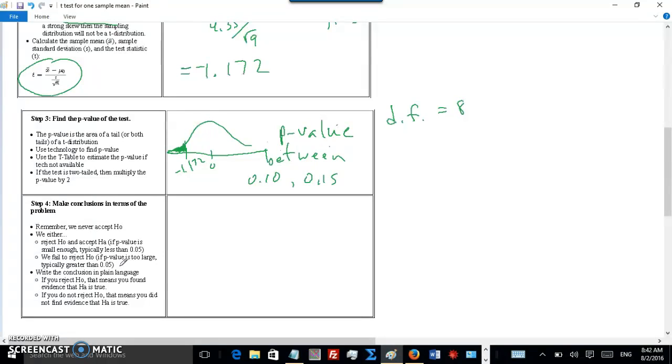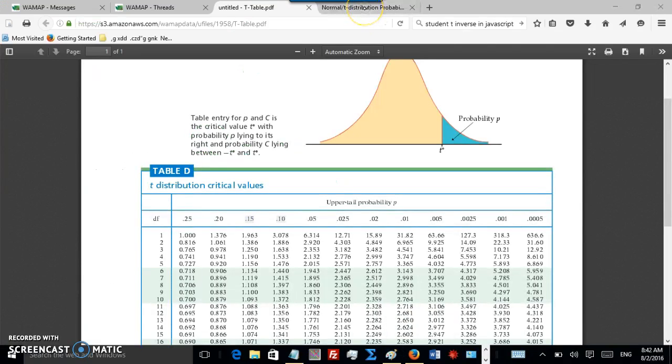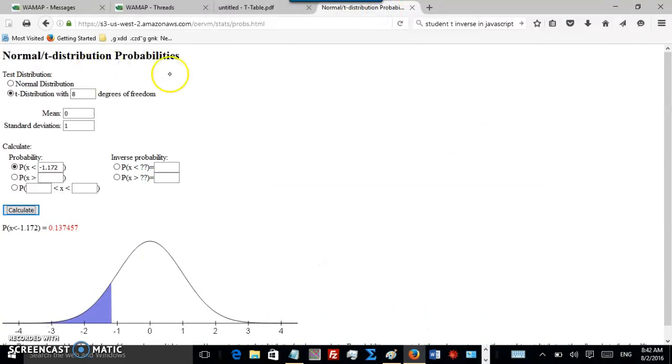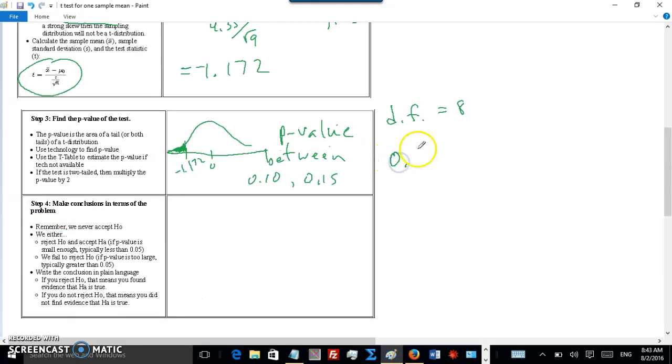However, if you prefer, if you want a more precise p-value, you can go to this website that does these calculations for you, the normal curve and the T-distribution. So click T-distribution, type in 8 degrees of freedom, and then click probability X less than negative 1.172, and click Calculate, and you'll see 0.137457. So let's just round that to 0.137. So you can say 0.137 for a more precise p-value.